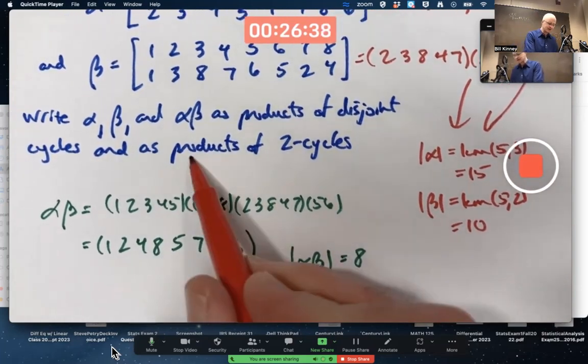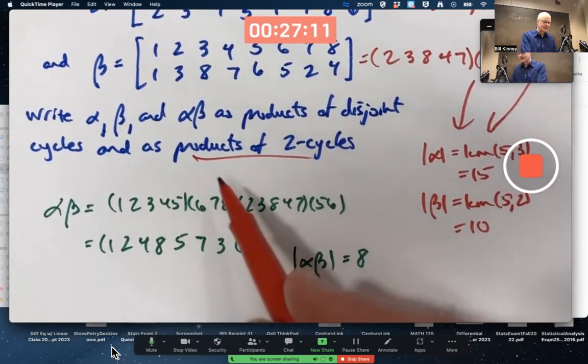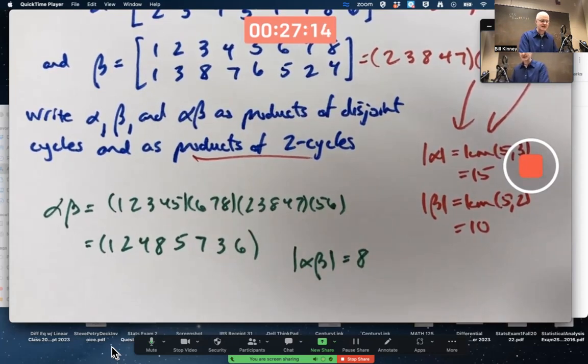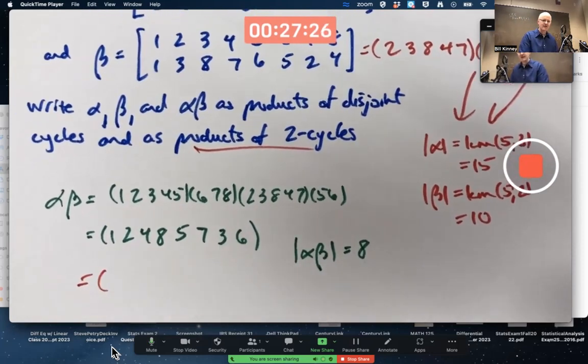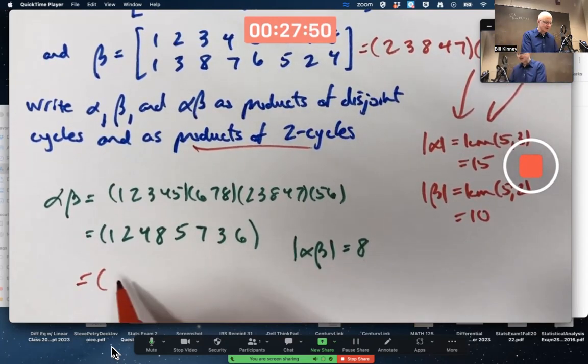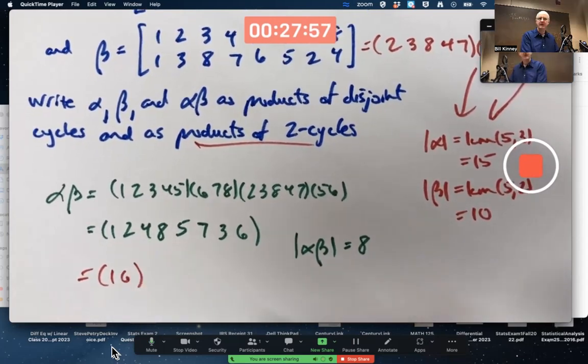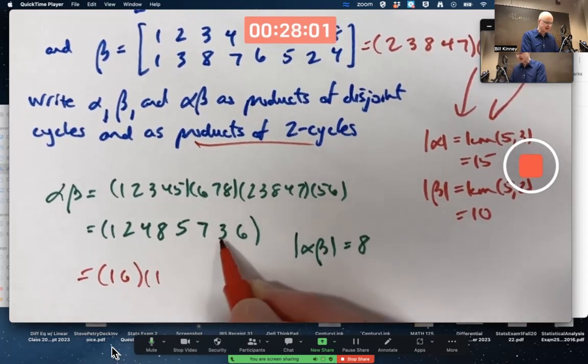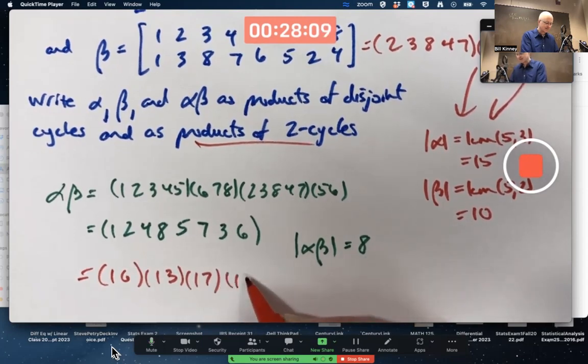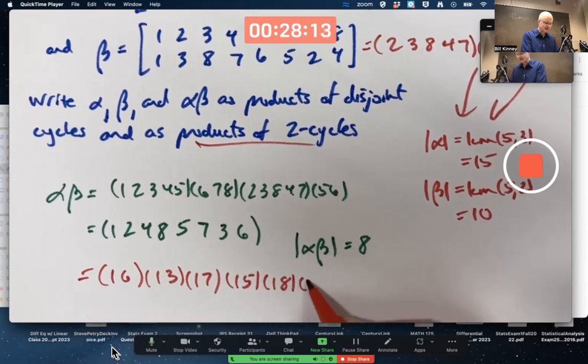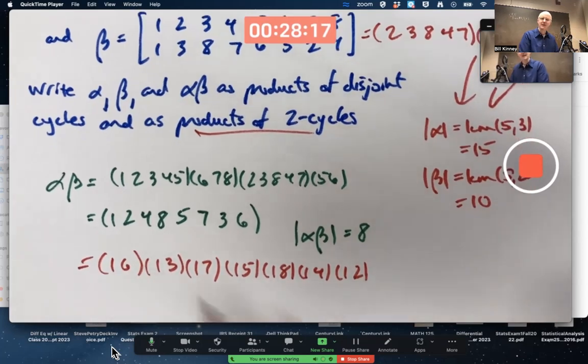But now, what about as products of 2 cycles that are not necessarily disjoint? Writing it as a product of 2 cycles is trickier. And when I say a product of 2 cycles, there's nothing about it being disjoint. These are not necessarily disjoint cycles. It's probably easier if you've got just one long cycle like this. And it involves a trick. So you've got one long cycle there. Start with the first number. And write the last number next. And make that one of your two cycles. Then do the first number again and write the second to last number. Then do the first number again and write the third to last number, etc. Until you get to the first number and the second number. This does work. It's a trick that works. Double check it.